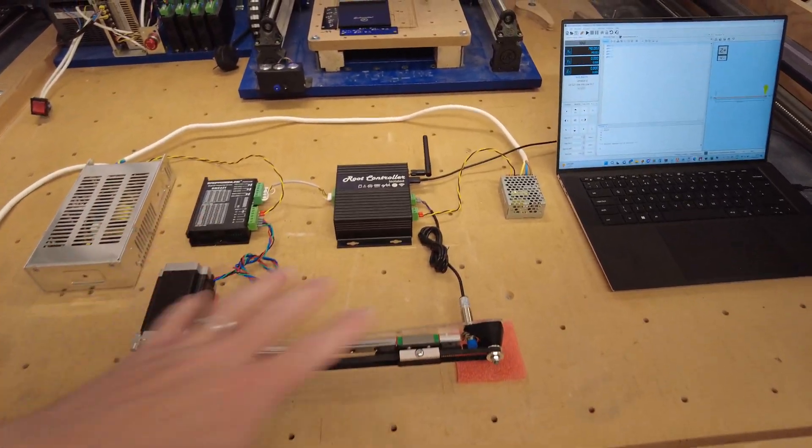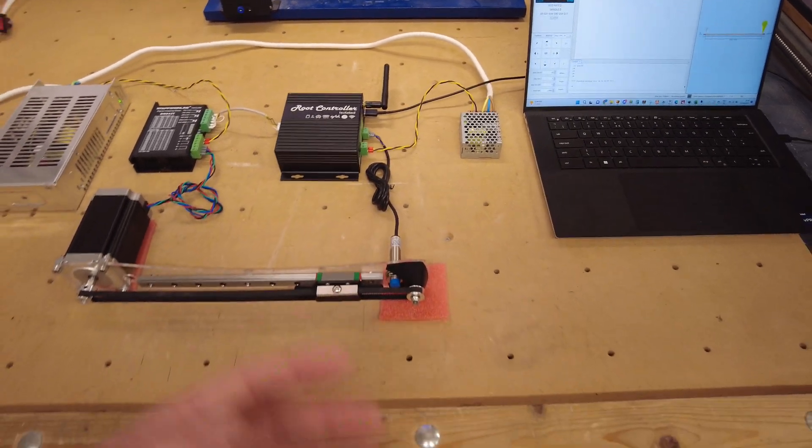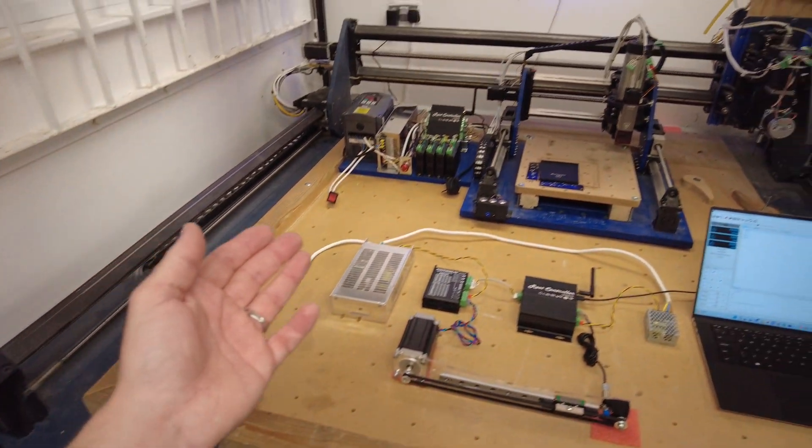Once you understand that this is the basics, all you have to do is scale up each part for the number of axes you've got. You can go on and build an even larger machine like you see here.